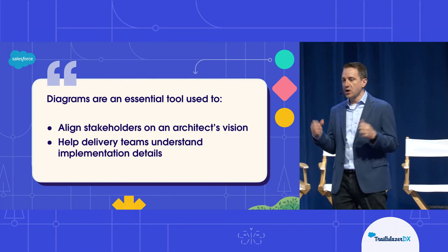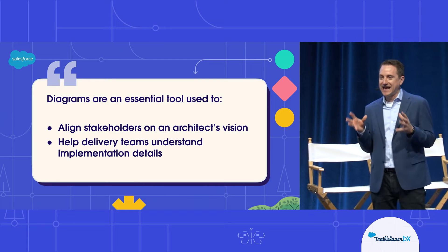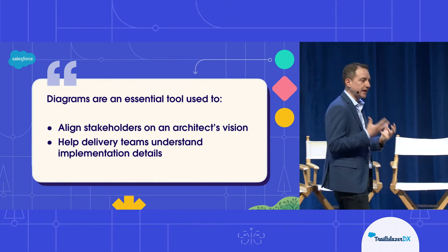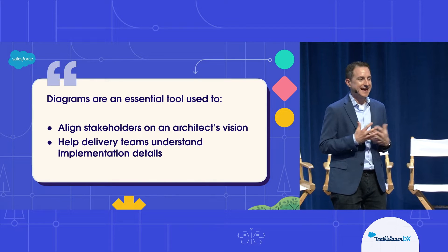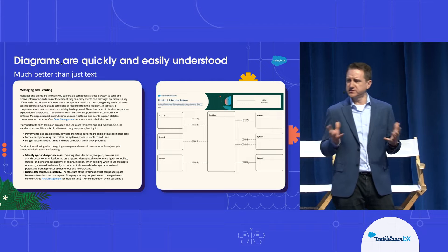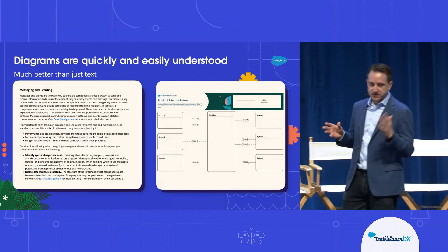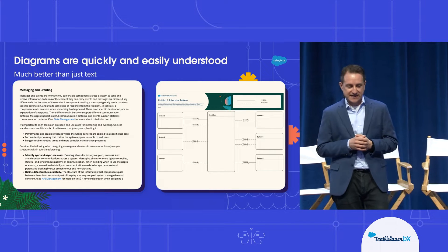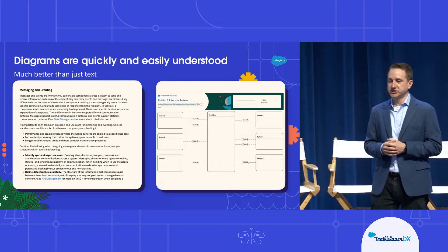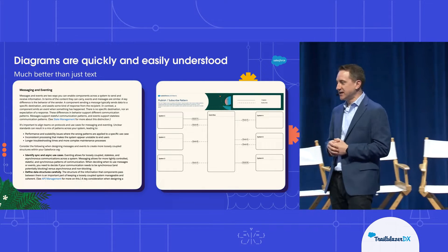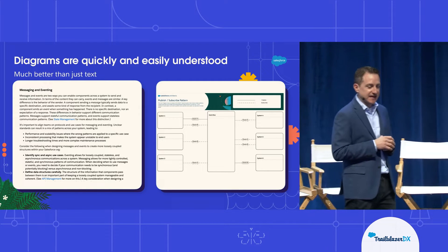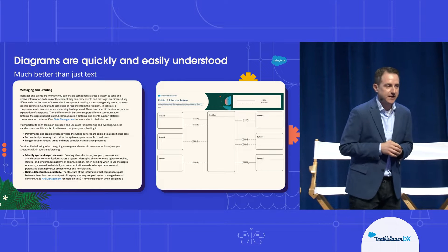Diagrams are one of the major vessels to bring well-architected solutions to your stakeholders. They can align your stakeholders to your vision - they're a fantastic tool for that. Also very importantly, you have developers, consultants, and people working in the tool - you have to give them the details. Diagrams are an awesome way to do that. On the left side we see a solution write-up with text on a messaging and event solution going to the CTO. On the right-hand side, exact same solution. Which one is easier to read? Which one is going to get buy-in from the CTO? This slide alone should show you the power of diagrams.